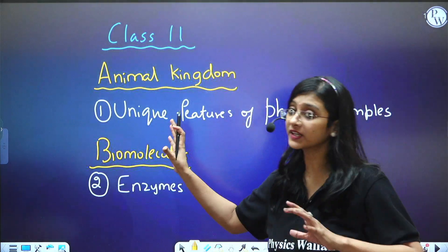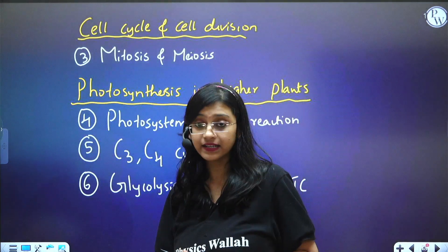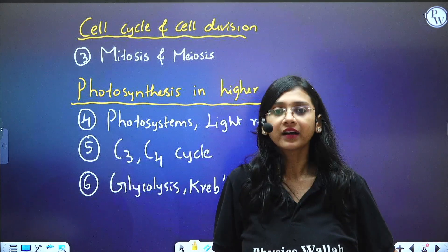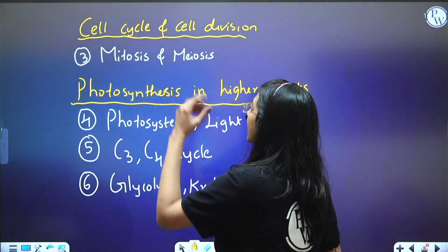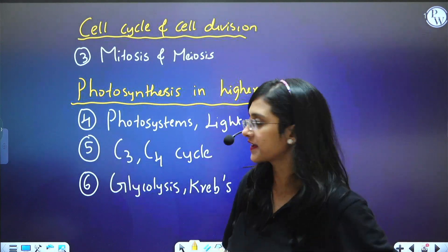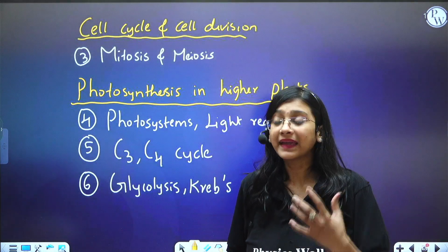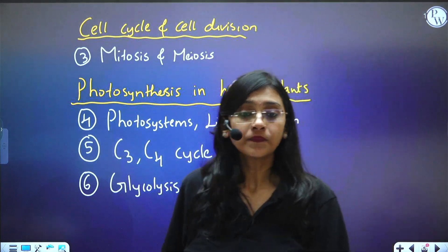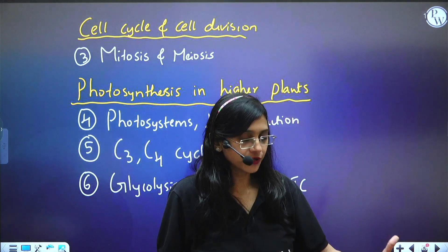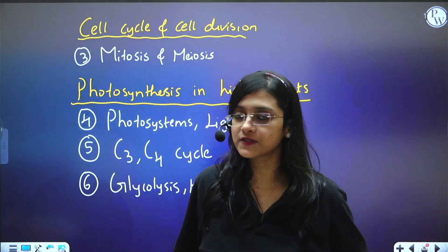The third topic is from Cell Cycle and Cell Division — mitosis and meiosis. What is important is mitosis and meiosis in detail, all the phases, including the sub-phases of prophase in meiosis. Study these well because numerical questions are coming: they may give you the number of chromosomes in a diploid cell and ask for the chromosome count in different phases of meiosis or mitosis.